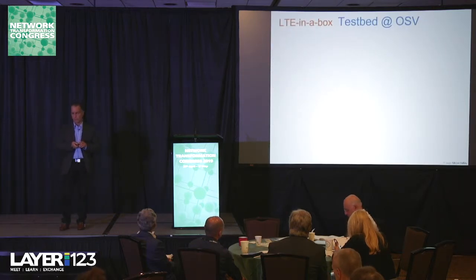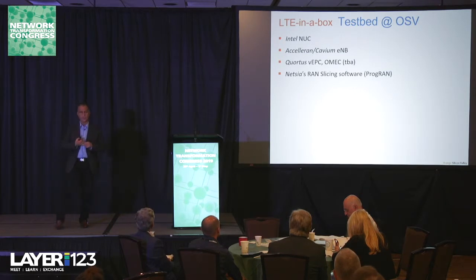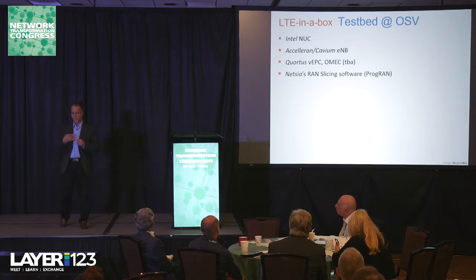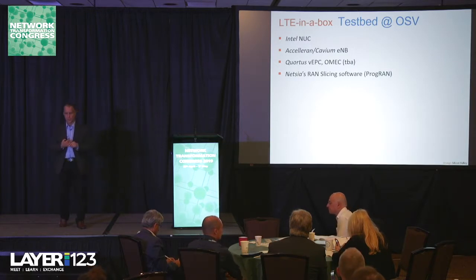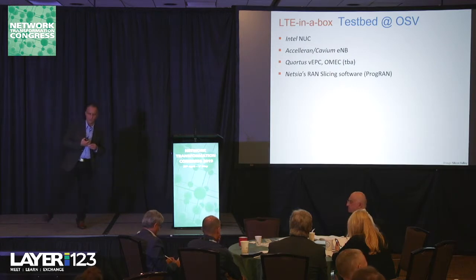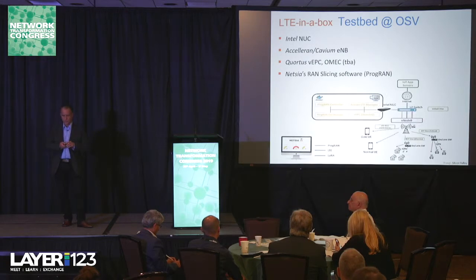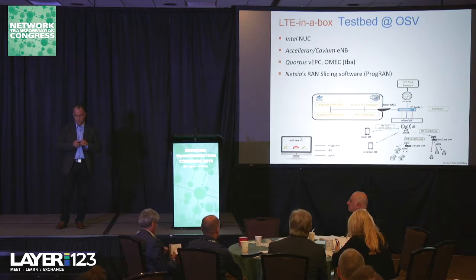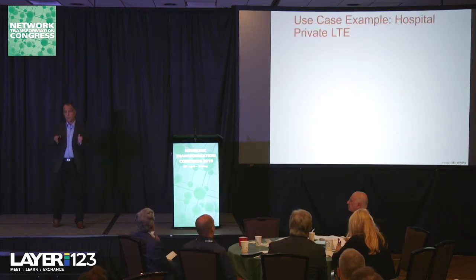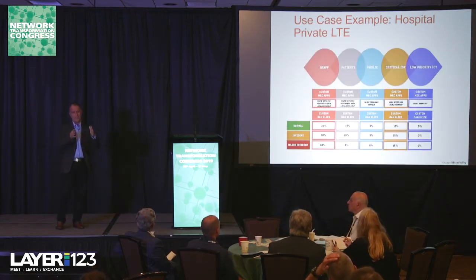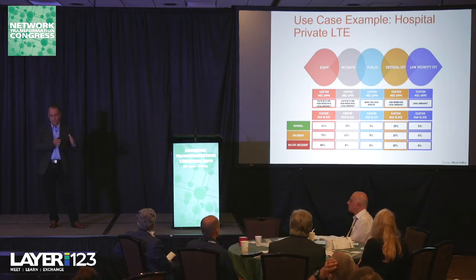We've been working on private LTE for about a year and a half. Right now it's what we call 'LTE in a box.' Our test bed consists of a couple of Intel NUCs, eNodeBs from Acceleron and Cavium, a vEPC from Quortus — a company out of the UK — and we're looking at an open-source virtual EPC from Sprint and Intel once it stabilizes. We're also using NetSias, a Bay Area startup, for the RAN slicing component. The architecture supports IoT, so we created different slices including one for IoT. The use case we focused on is a hospital private LTE.